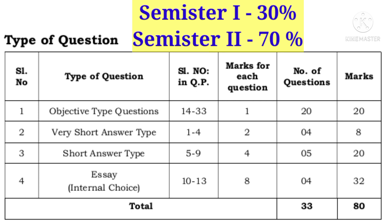Short answer type questions are from question number 5 to 9. There are 5 questions, each carries 4 marks, so 5 into 4 is 20 marks. SA type questions are from 10 to 13, each carries 8 marks, and there are 4 questions, so 4 into 8 marks is 32 marks. Total questions are 33.